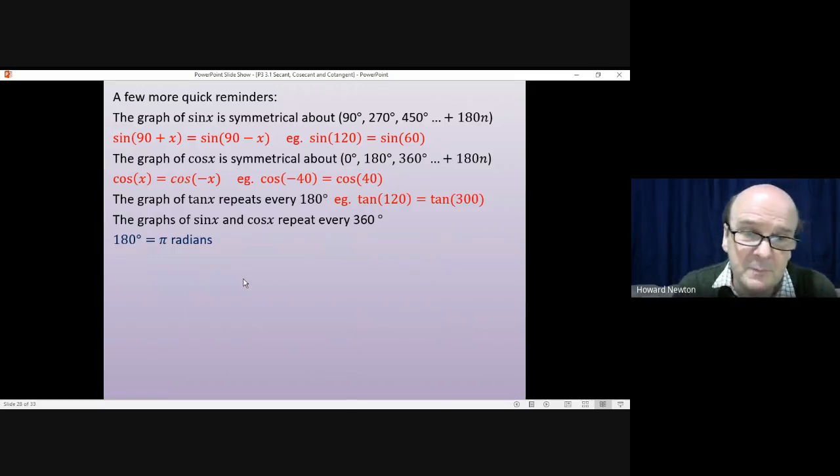The other thing that you will need to remember for this question is how radians work. I think if you're going to remember one thing for radians, this is probably it. 180 degrees is exactly the same as pi radians, and you can work from there to work out anything else that you need to know, converting between degrees and radians.